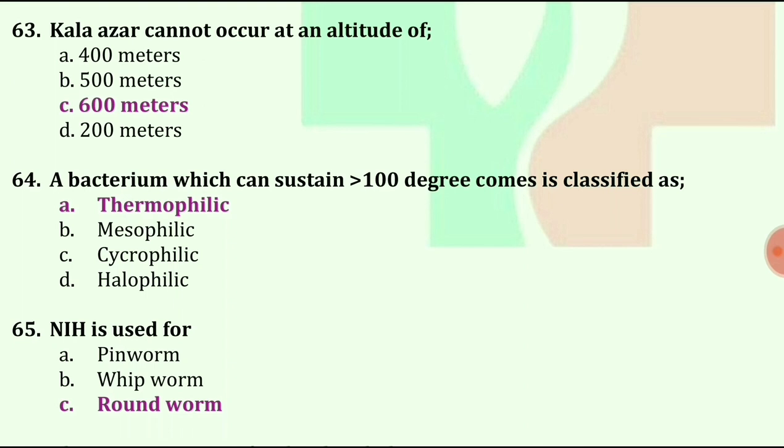A bacterium which can sustain more than 100 degrees Celsius is classified as thermophilic. NIH is used for roundworm.